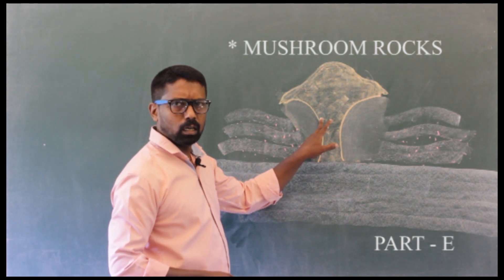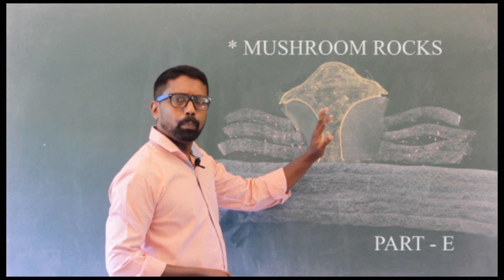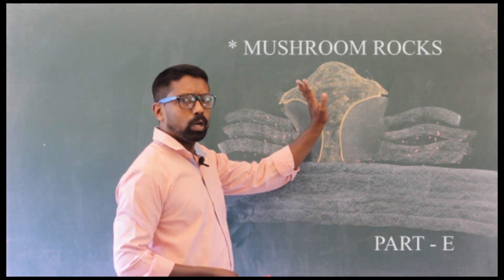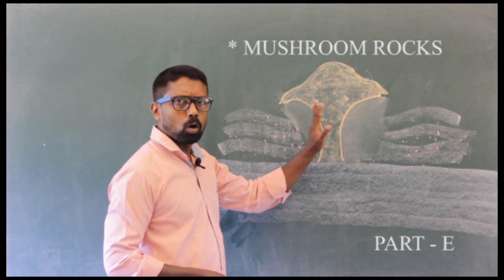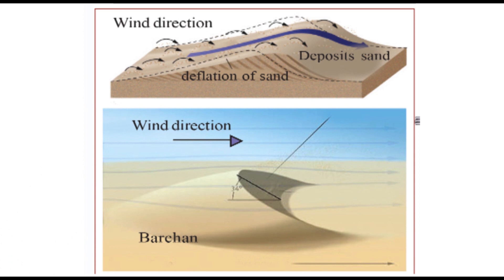Such rocks seen in deserts resembling mushrooms are called mushroom rocks. The sand dunes formed in the deserts are a result of the deposition by wind. The sand dunes commonly formed in crescent shapes are called barchans.